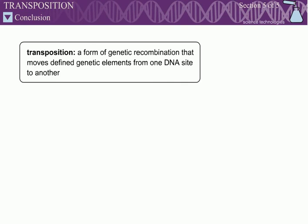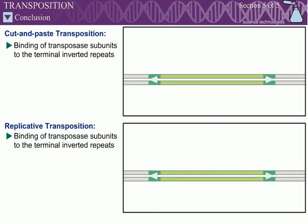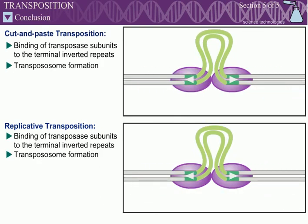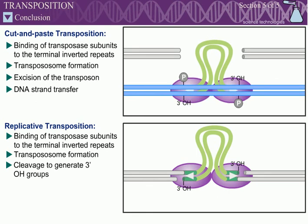Transposition is a form of genetic recombination that moves defined genetic elements, called transposable elements or transposons, from one DNA site to another. The recombinases responsible for transposition are usually called transposases. Transposition can occur by either of two mechanisms: cut-and-paste transposition or replicative transposition. While the outcomes of the two mechanisms are different, the mechanism of strand transfer is very similar in both cut-and-paste transposition and replicative transposition.